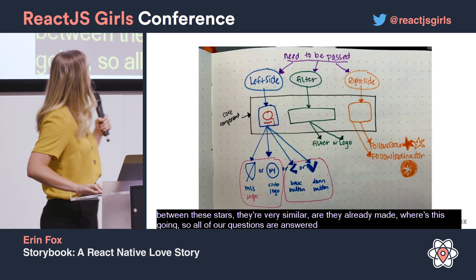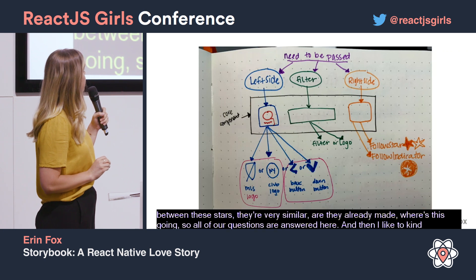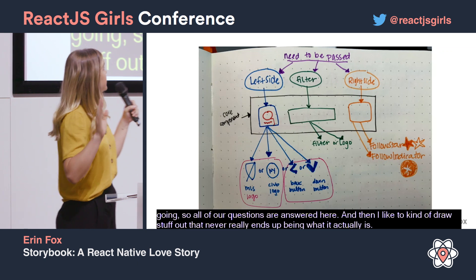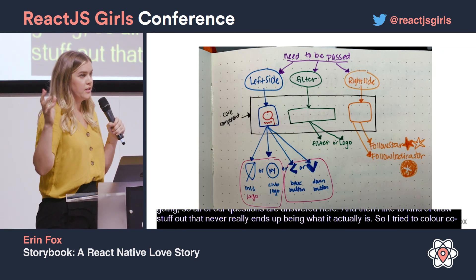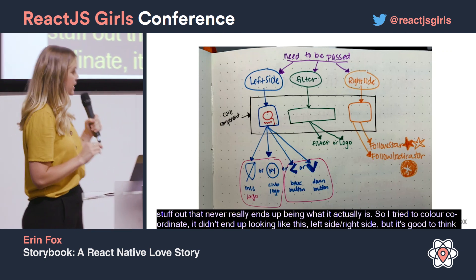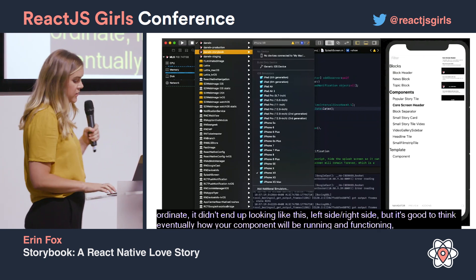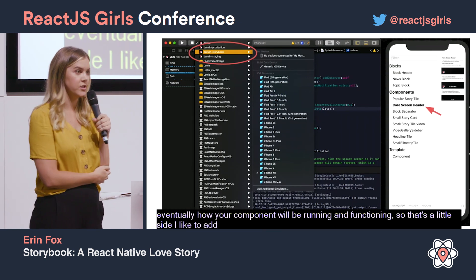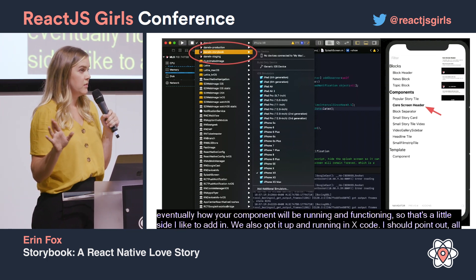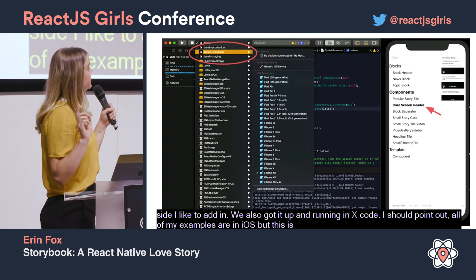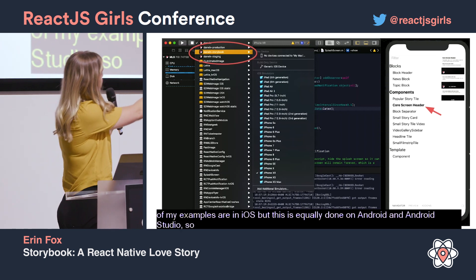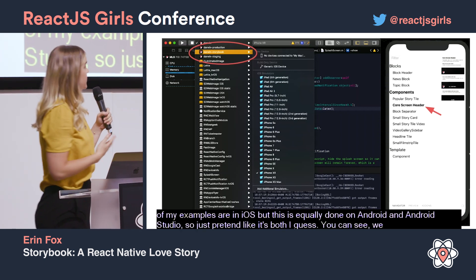I like to draw stuff out — it never really ends up looking exactly like I sketch, but it's good to think through how your component will run and function. We also got it up and running in Xcode. All my examples are iOS, but this is equally done on Android and Android Studio — just pretend it's both. You can see we started building out our components: we have a small story card and a block separator.